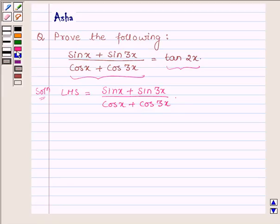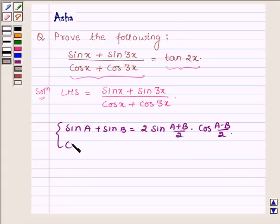Now first let us learn some simple identities which says that sin a plus sin b is equal to 2 sin a plus b upon 2. So cos a plus cos b is equal to 2 cos a plus b upon 2 into cos a minus b upon 2.